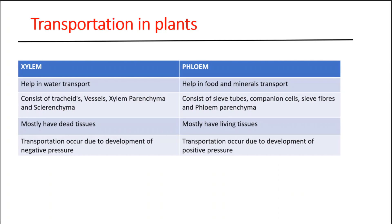First is the transportation system in plants. In the plant, you have two most important tissues. One is xylem and the second is phloem. In previous classes, you will have studied that xylem is mainly responsible for the transportation of water, and phloem is responsible for the transportation of food and minerals.